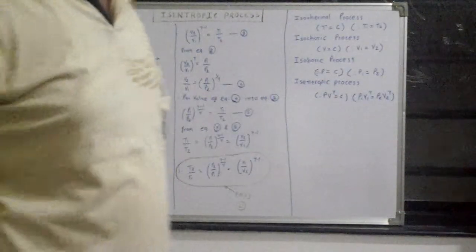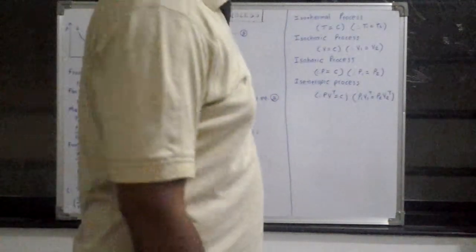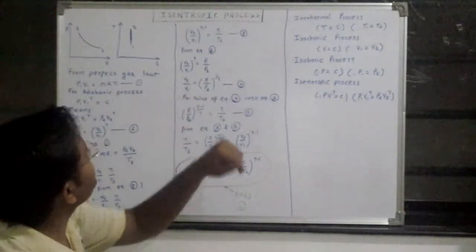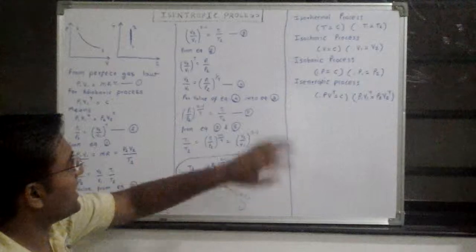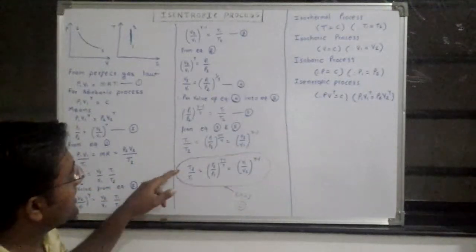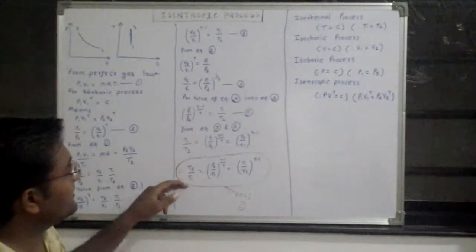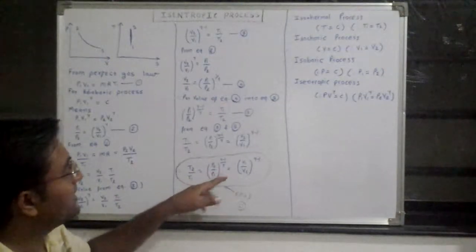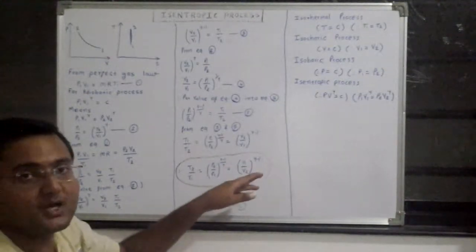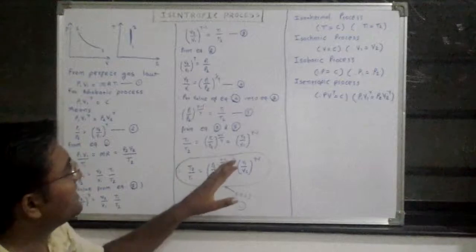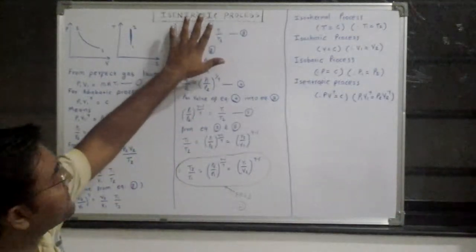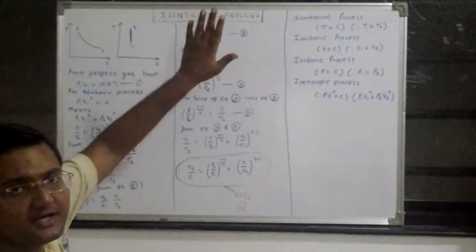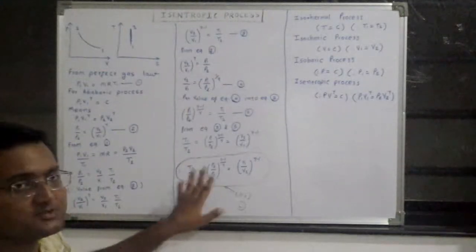Hello friends, my name is JB. Today we are going to learn about the isentropic process. We are going to discuss how T2 divided by T1 equals P2 by P1 raised to (gamma minus 1) upon gamma, which is equal to V1 by V2 raised to gamma minus 1. Whenever the isentropic process is used in the derivation of any cycle, this equation must be utilized.